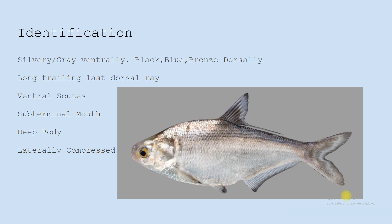It has a long trailing last dorsal ray, similar to the threadfin shad. It has ventral scutes — small scales that act like spines — so it cannot be swallowed tail first in most cases; it has to be head first. It has a deep body, laterally compressed, kind of like a sunfish, and it has a sub-terminal mouth.